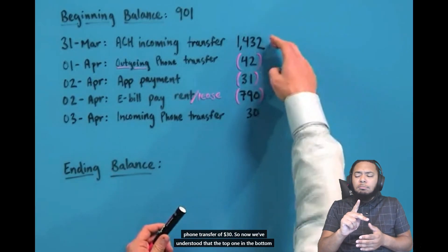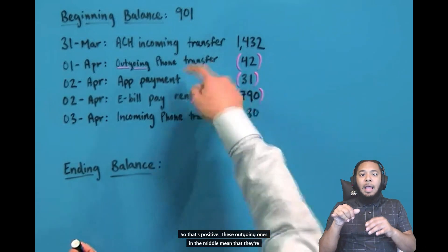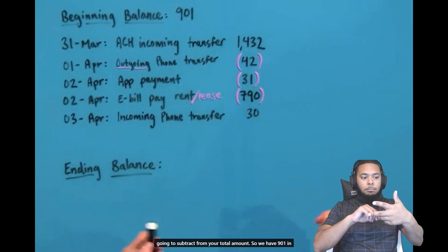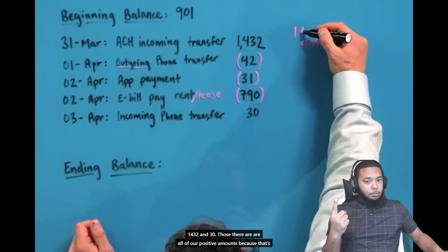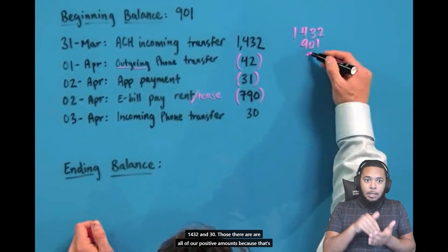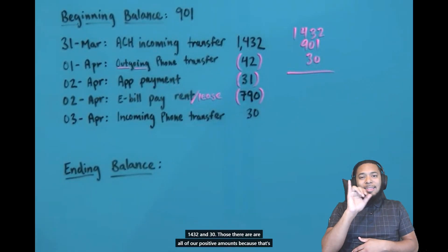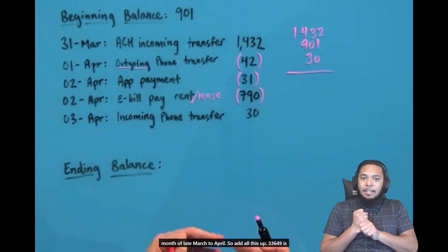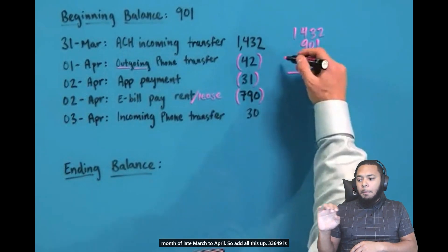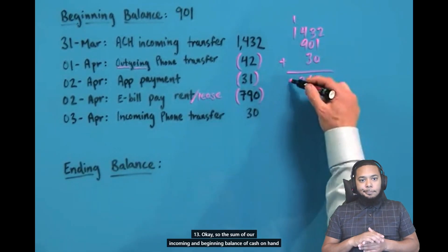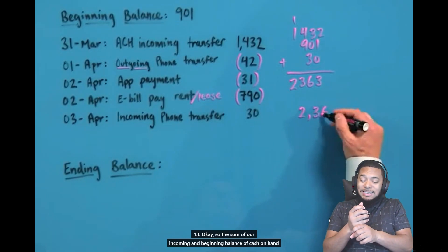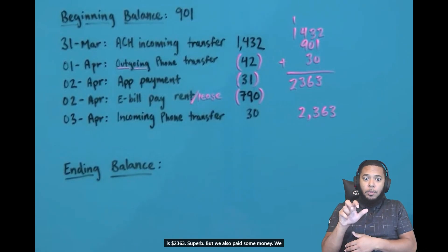So now we've understood that the top one and the bottom one are incoming. They're coming into you as money that's received. So that's positive. These outgoing ones in the middle mean that they're going to subtract from your total amount. So we have 901 and 1432 and 30. Those are all our positive amounts because that's all money that we either had to begin with or that came into us during the month of late March to April. So the sum of our incoming and beginning balance of cash on hand is $2,363. Superb.